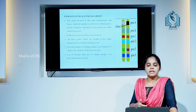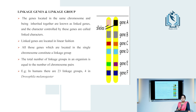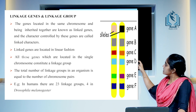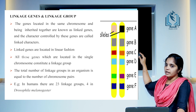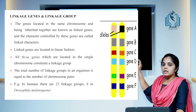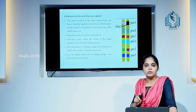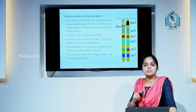Next, we discuss linked genes and linkage groups. Genes located in the same chromosome and being inherited together are known as linked genes. Here you can see an image of chromosomes with genes A, B, C, D, E, and F arranged linearly — the arrangement of linked genes in chromosomes is linear in position. All genes located in the same chromosome form a linkage group. The number of linkage groups equals the number of chromosome pairs. For example, in humans there are 23 pairs of chromosomes, so there are 23 linkage groups.